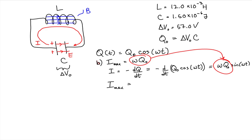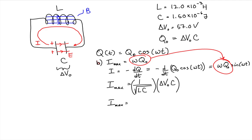The maximum current equals ω times Q₀. Since ω equals 1 over the square root of LC, and Q₀ equals the product of the initial potential difference and the capacitance, substituting gives: the maximum current equals the potential difference times the square root of the ratio of capacitance to inductance.